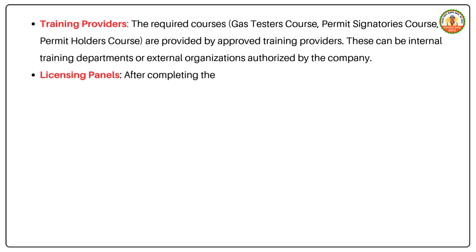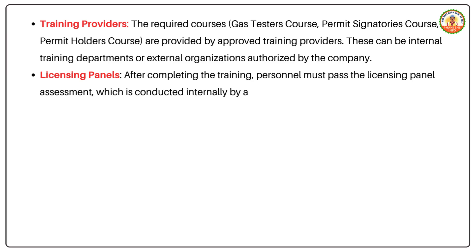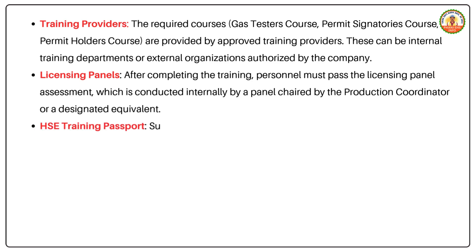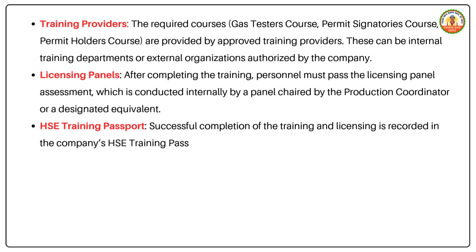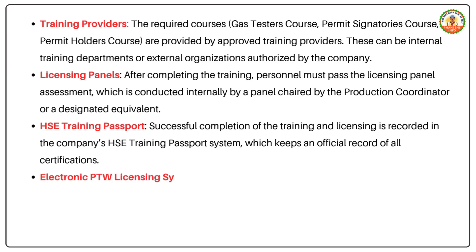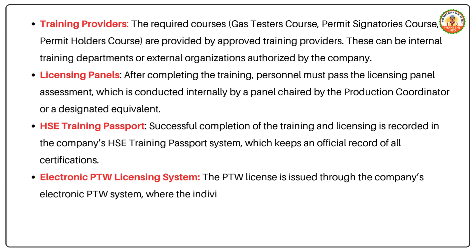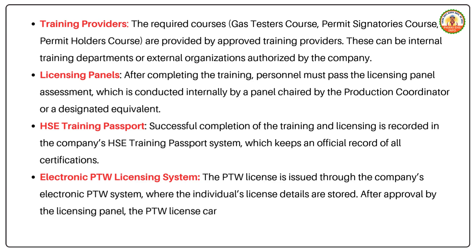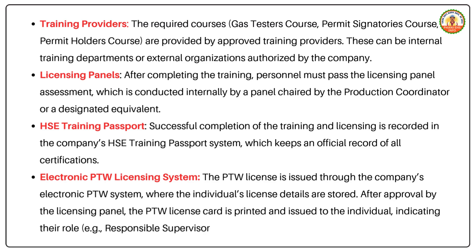Licensing Panels — after completing the training, personnel must pass the licensing panel assessment, which is conducted internally by a panel chaired by the production coordinator or a designated equivalent. HSE Training Passport — successful completion of training and licensing is recorded in the company's HSE Training Passport system, which keeps an official record of all certifications. The PTW license is issued through the company's electronic PTW system, where the individual's license details are stored. After approval by the licensing panel, the PTW license card is printed and issued to the individual, indicating their role, for example, responsible supervisor or permit holder.